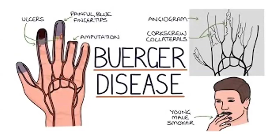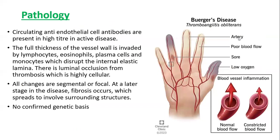A diagram illustrates certain features of Buerger's disease: a young male smoker, ulcer formation on the skin, painful blue fingers, and even amputations. On angiogram, typical corkscrew collaterals are seen — this is characteristic of Buerger's disease.